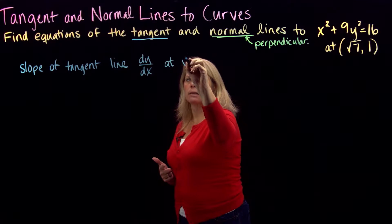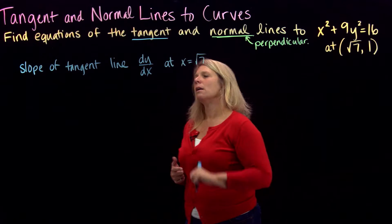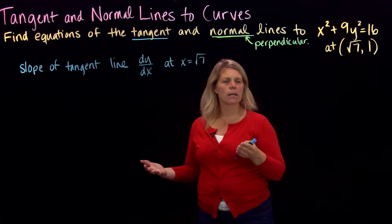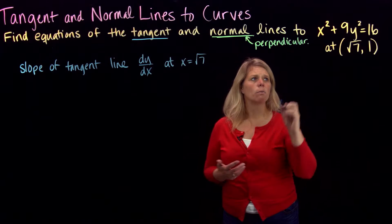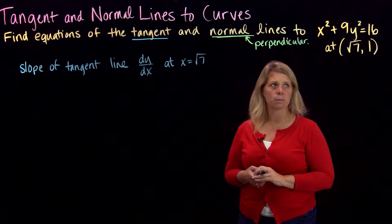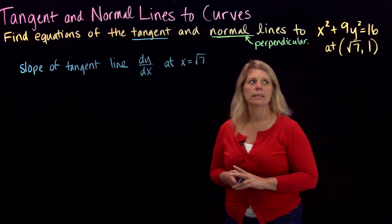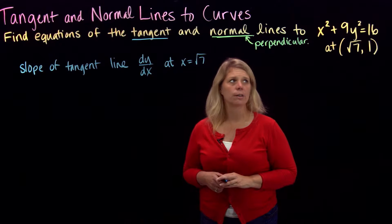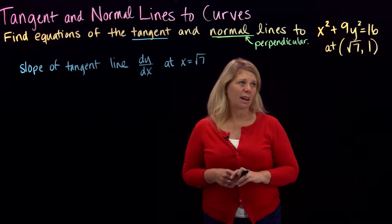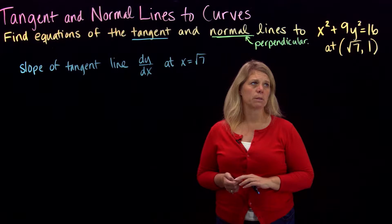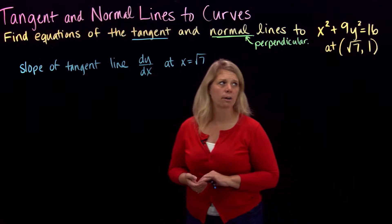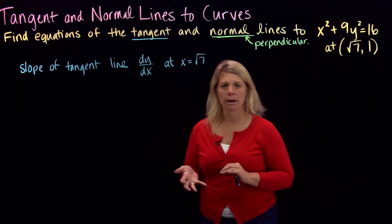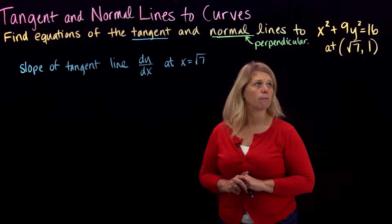I'll just write here at x equals square root of 7. Okay, so we're going to start by finding dy dx. One thing that we might notice about this particular equation, though, as opposed to the last one we looked at, is that this equation is not solved explicitly for y. And in fact, if you try to solve it explicitly for y, you have some kind of complicated algebra because of a plus and minus square root that end up involved there.